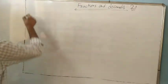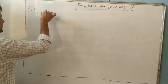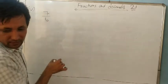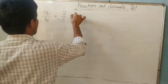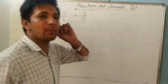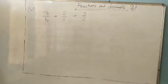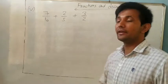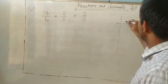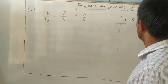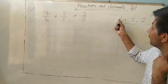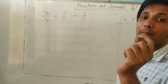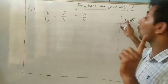Now let's look at part five of question one: 7/10 + 2/5 + 3/2. First step is to find the LCM of the denominators 10, 5, and 2. Write all three numbers and divide by the smallest prime number that divides at least one of them.